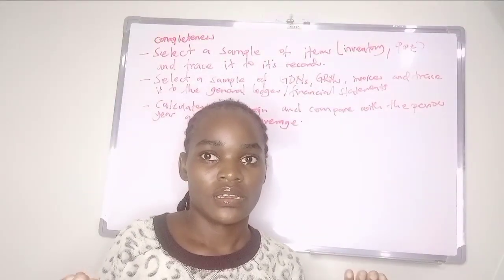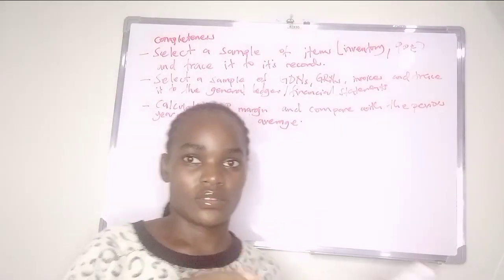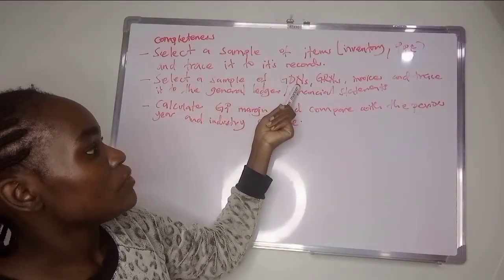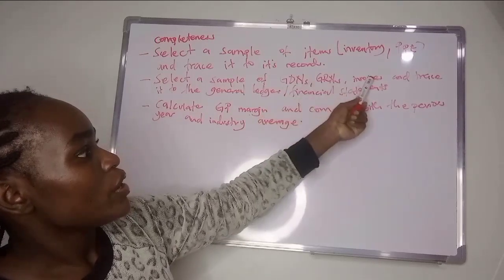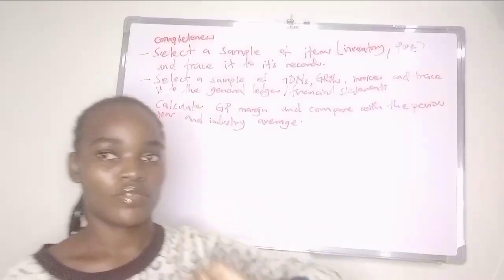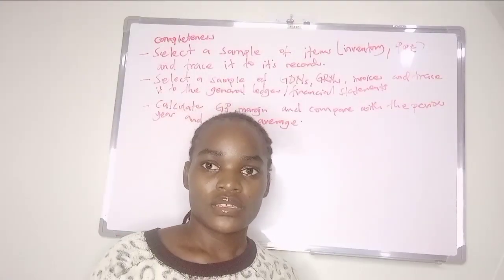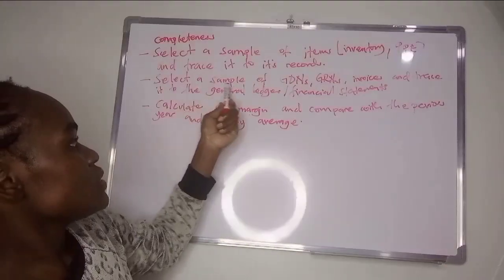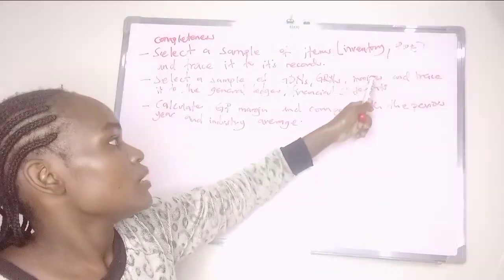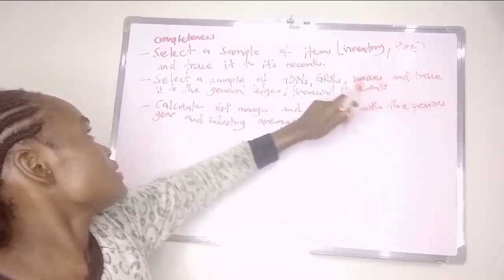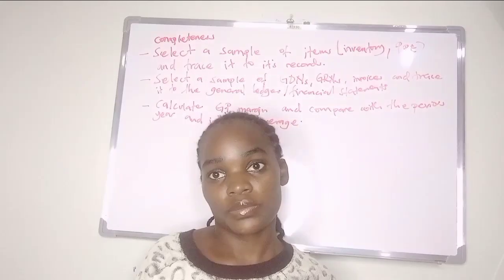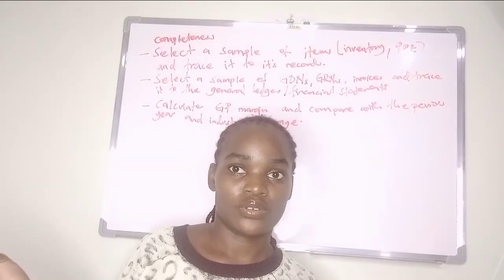So in case you're dealing with sales, to confirm completeness of sales, you say: select a sample of goods delivered notes or invoices and trace it to the general ledger or financial statements to confirm completeness. That's how you do it.